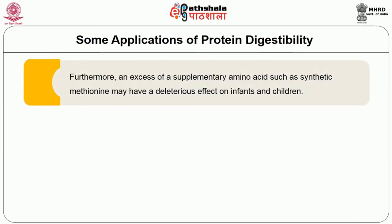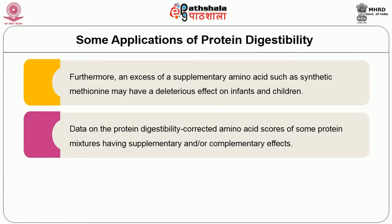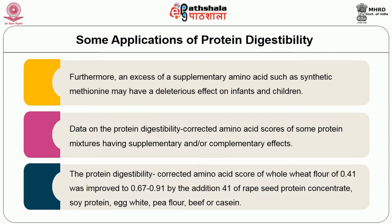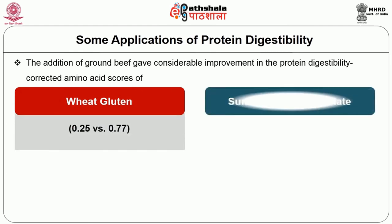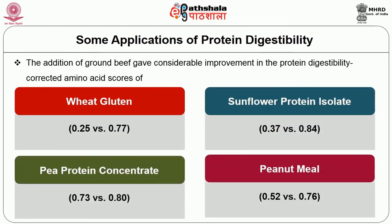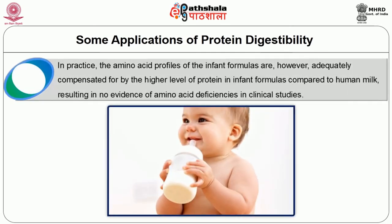An excess of supplementary amino acids such as synthetic methionine may have deleterious effects on infants and children. PDCAAS of some protein mixtures having supplementary or complementary effects: the PDCAAS of whole wheat flour at 0.41 was improved to 0.67 to 0.91 by the addition of 41 percent rapeseed protein concentrate, soy protein, egg white, pea flour, beef, or casein. Similarly, the addition of ground beef gave considerable improvements in the PDCAAS of wheat gluten, sunflower protein isolate, pea protein concentrate, and peanut. In practice, the amino acid profiles of infant formulas are compensated for by the higher levels of protein in infant formulas compared to human milk, resulting in no evidence of amino acid deficiencies in clinical studies.